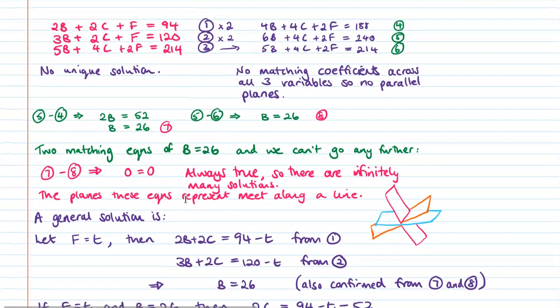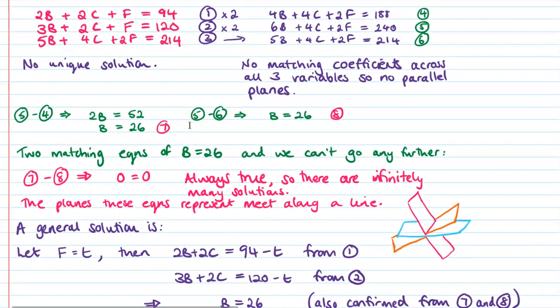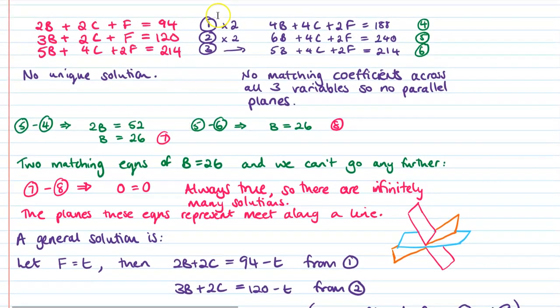So we then work this through manually with algebra. So my first step is to multiply up these equations into a form where one of the terms we have there has the same coefficient. So I've done it enough to match up the F's. They look like the simplest with these equations that we have. So I've multiplied them up so that all of the F's are 2F. And then we take a look at what we have.